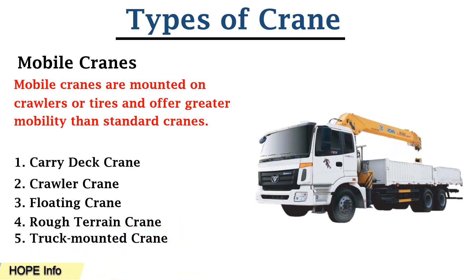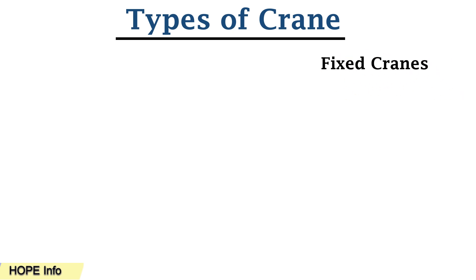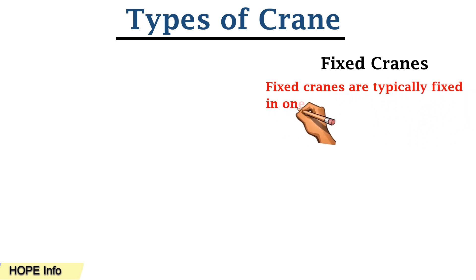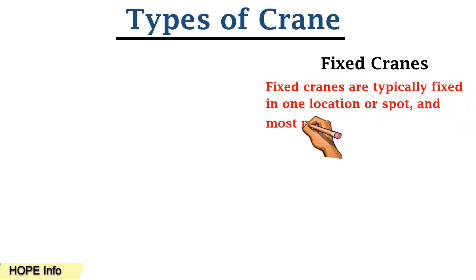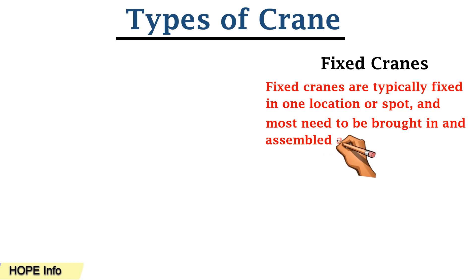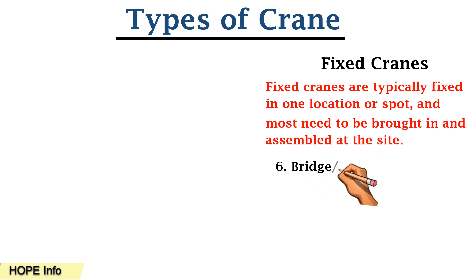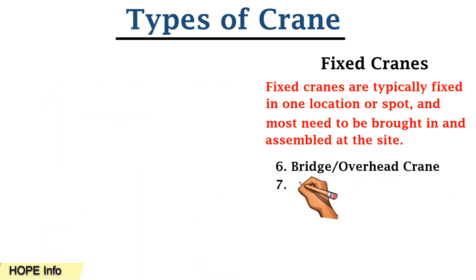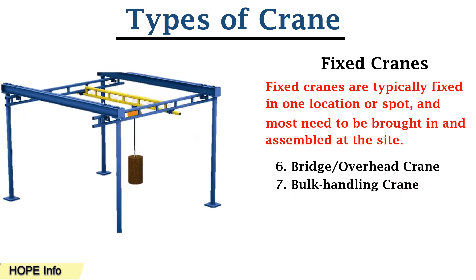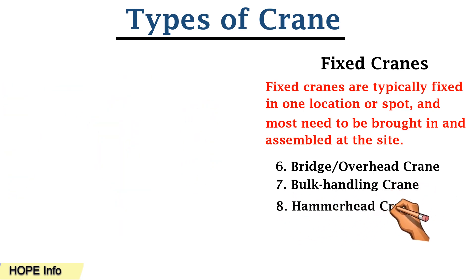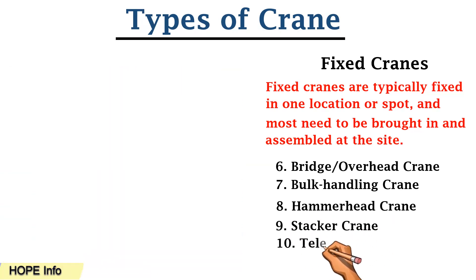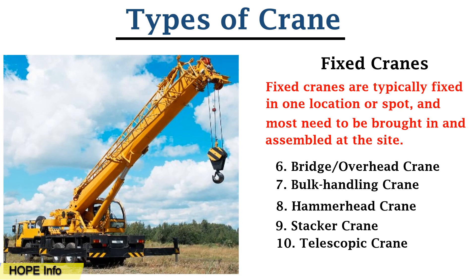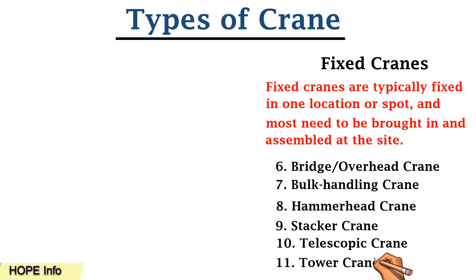Truck mounted cranes use a truck to carry the lifting equipment. Another type is fixed cranes, which are fixed in one location and need to be brought in and assembled at the site. The sixth type is bridge and overhead cranes. The seventh is bulk handling cranes. The eighth is hammerhead cranes, especially used for building. The ninth is stacker cranes. The tenth is telescopic cranes, a very popular type used at many job sites. The eleventh is tower cranes, used for building construction.